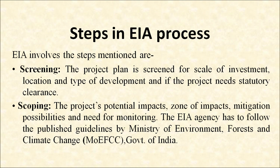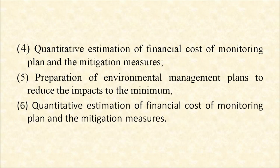Now, the steps in the EIA process. First is screening: the project plan is screened for the scale of investment, location and type of development, and whether the project needs statutory clearance. Second is scoping: the project's potential impact, zone of impacts, mitigation possibilities and need for monitoring. The EIA agency has to follow the published guidelines by the Ministry of Environment, Forest and Climate Change (MoEFCC), Government of India.